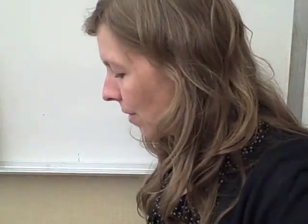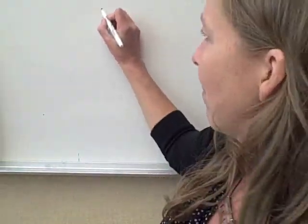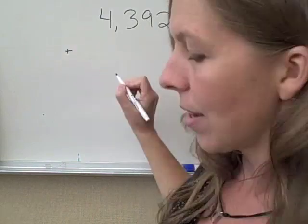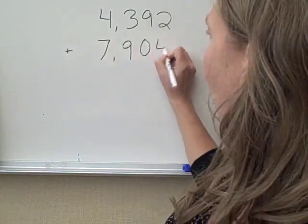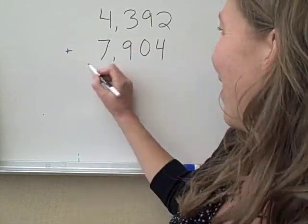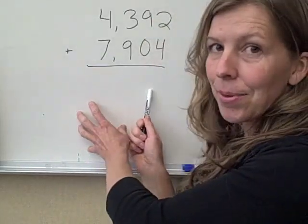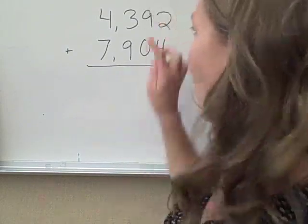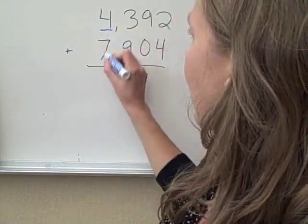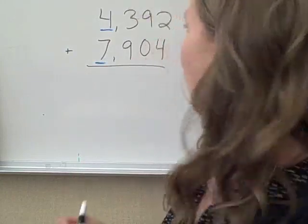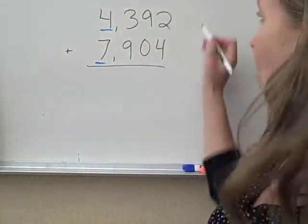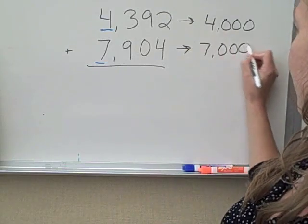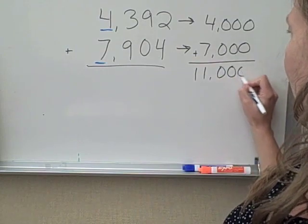How about we do this with, I wrote myself a problem, so I wouldn't lose my train of thought. 4,392 plus, I'm going to put it over here, 7,904. So what do we do? We're not going to find the accurate, precise answer because we're learning a second estimation strategy. We're going to do front-end estimation. So we focus on the leading digits, the leading digits here and here, and the rest of them become zeros. Hope this is visible. So this becomes 4,000, and this one becomes 7,000. Add that up, we get, oh, look at that 11,000 again.